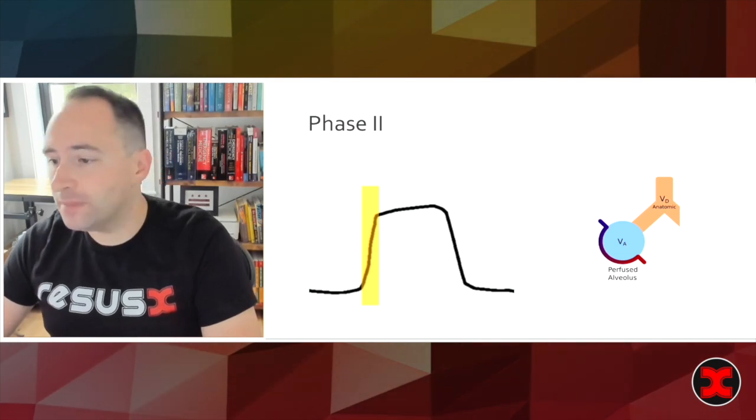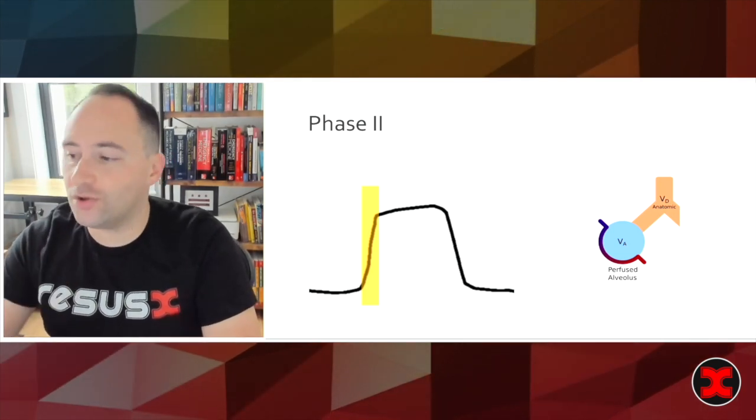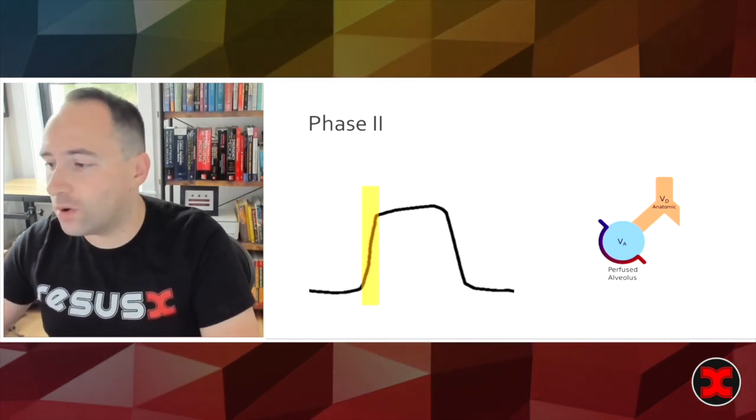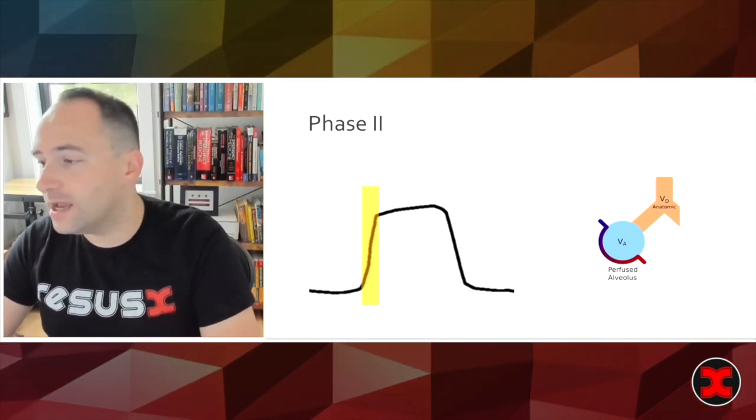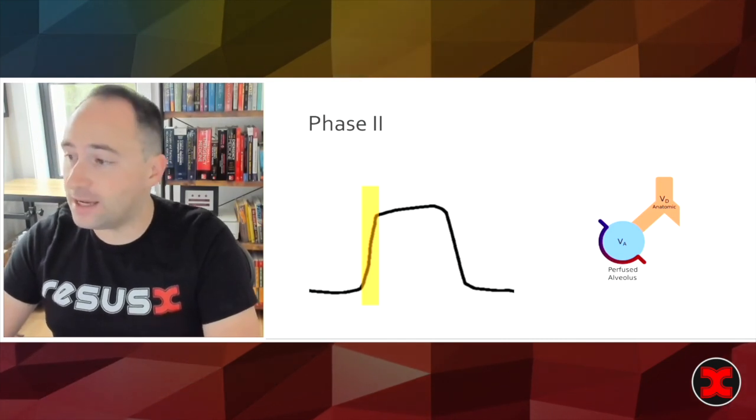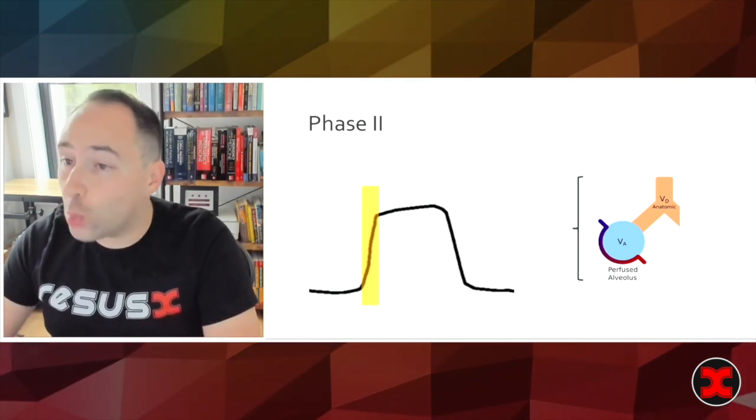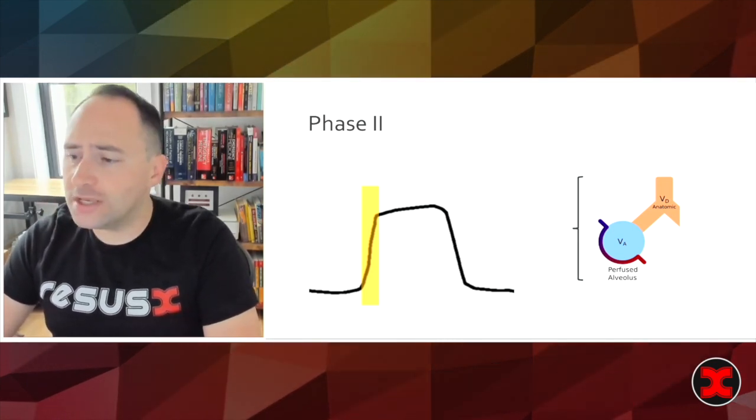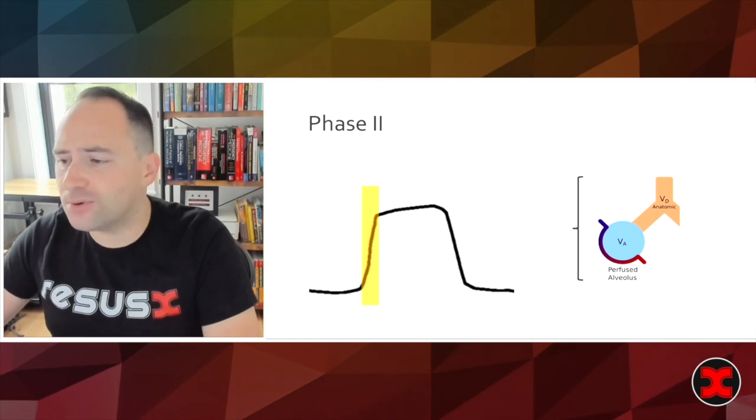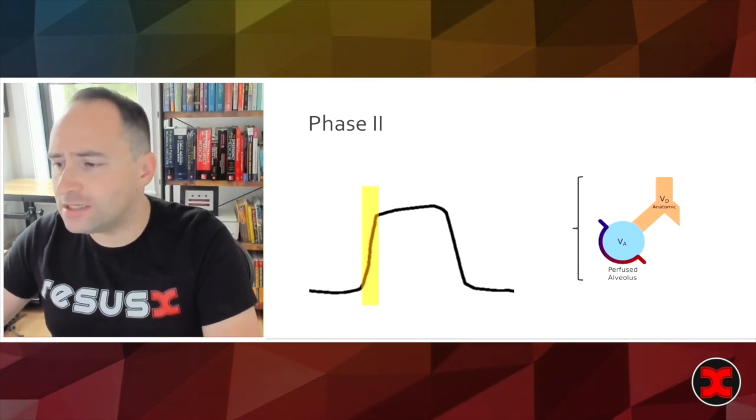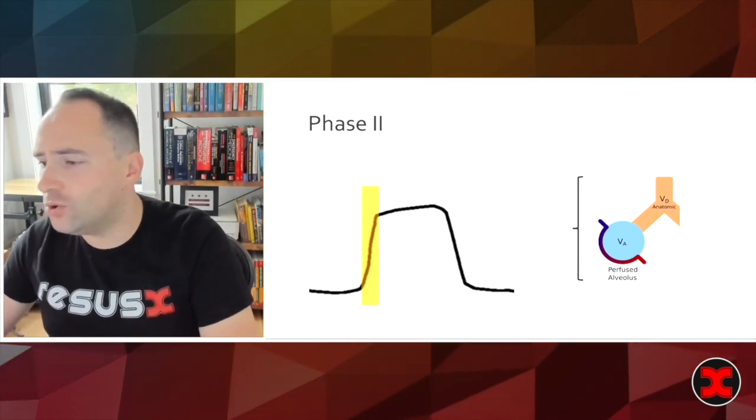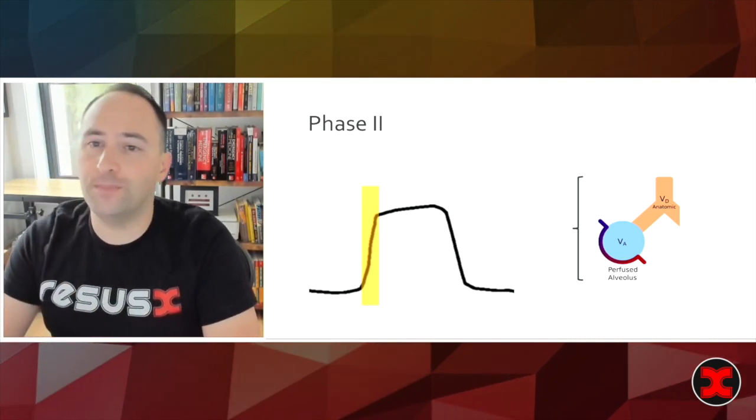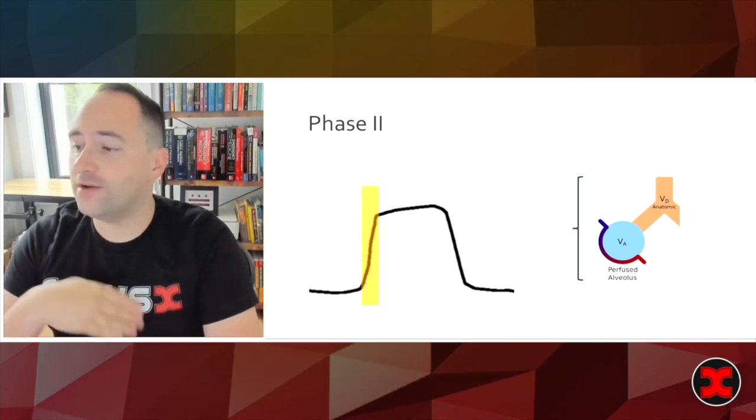Then we get to phase two. Phase two is called the transitional phase and what you can see here is a relatively steep rise in the waveform which represents sampling from both the dead space gas that we had before as well as sampling from the alveolar gas. So you can see here that the transitional phase is pretty steep and this is typically when V and Q are well matched. So strictly speaking the exhale gas here belongs to both phase one and phase three.